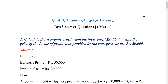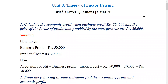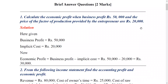So, accounting or business profit is 50,000. From that, we subtract the implicit cost of 20,000. Economic profit equals accounting profit minus implicit cost. So business profit is 50,000 minus implicit cost 20,000, which means the economic profit is 30,000. The owner or entrepreneur supplies the factor of production to their own business, so that cost of 20,000 is the implicit cost.